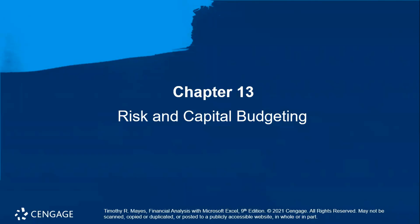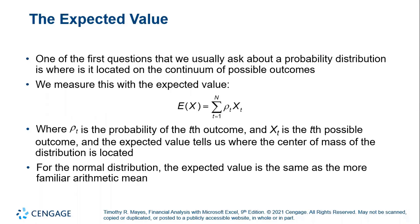Hello, welcome back to Chapter 13, Risk and Capital Budgeting — the Expected Value. One of the first questions that we usually ask about a probability distribution is where it is located on the continuum of possible outcomes. We measure this with the expected value.